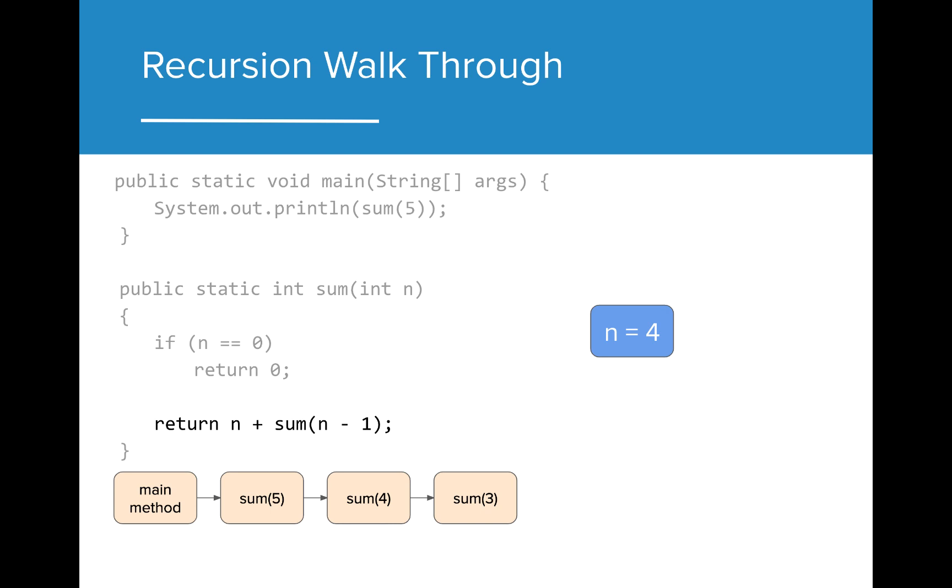We now return 4 plus sum of 3. Once again, we need to resolve sum of 3 before we can return 4 plus sum of 3. In our next call, n is still not 0, so we return 3 plus sum of 2. Notice how the parameter value for n tracks our progress through our loop, similar to how a loop control variable captures the progress of a loop.